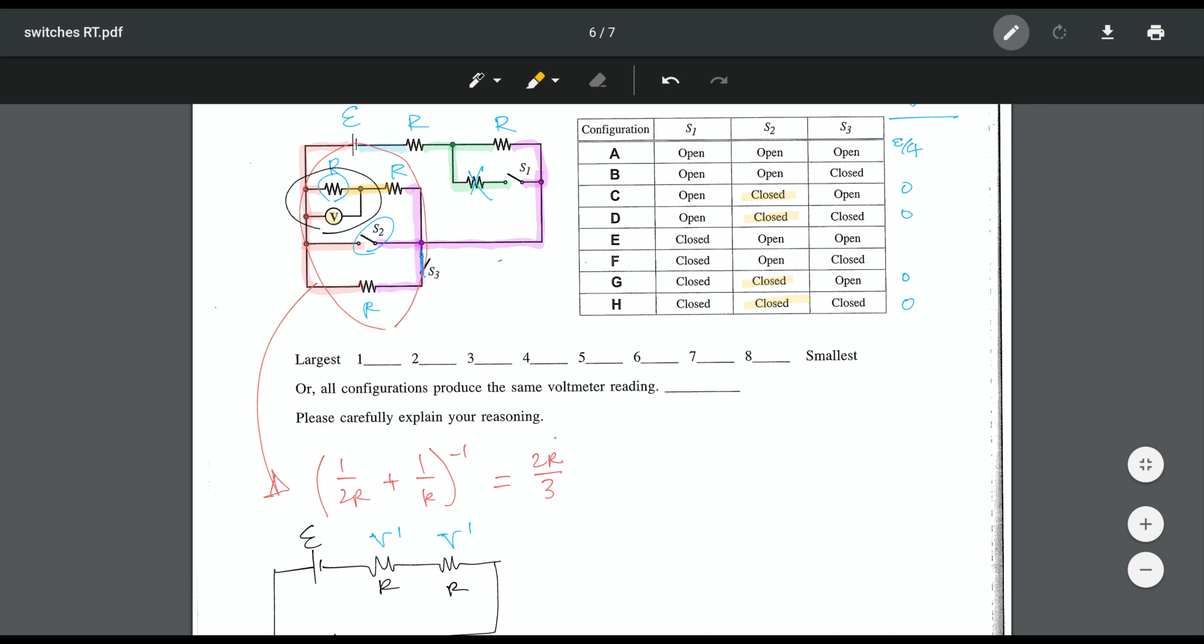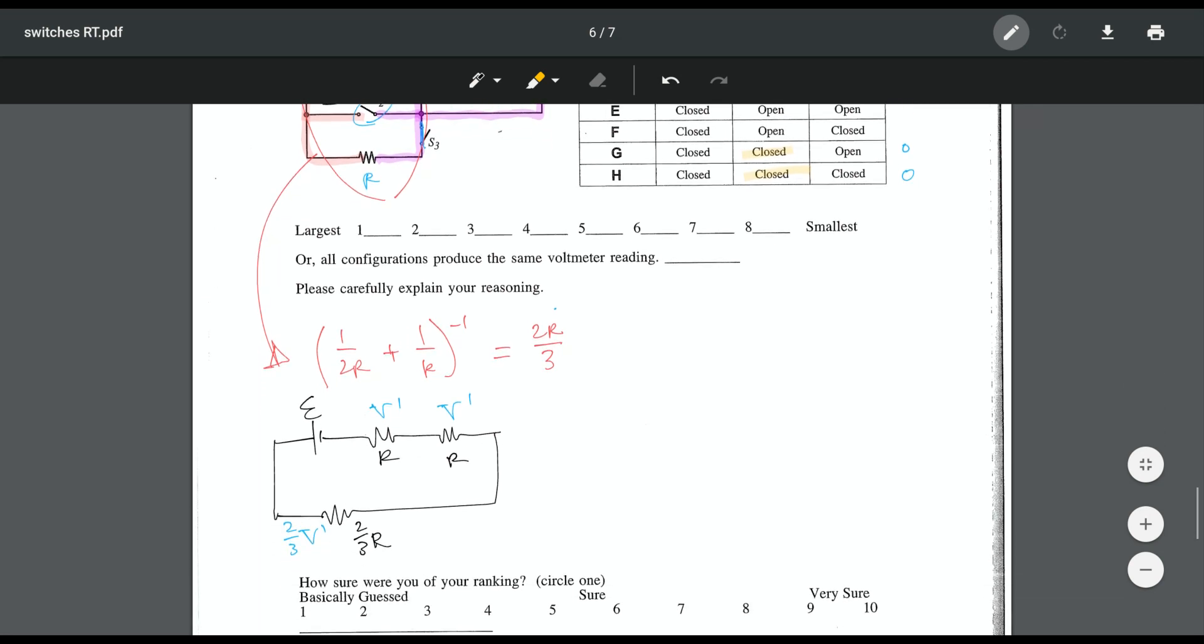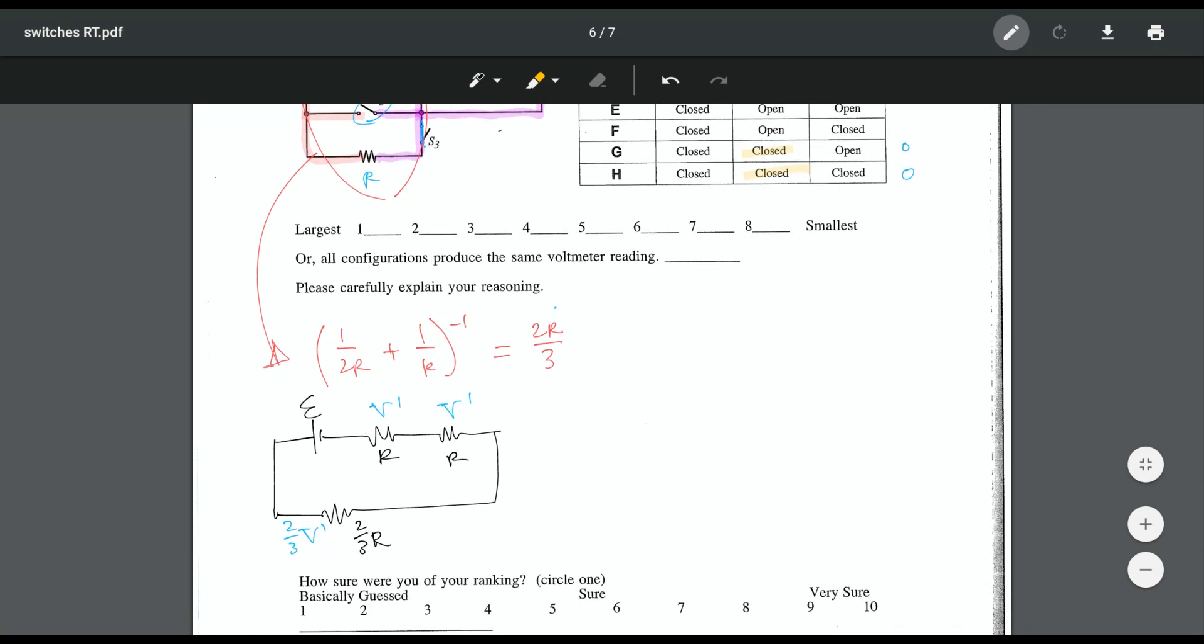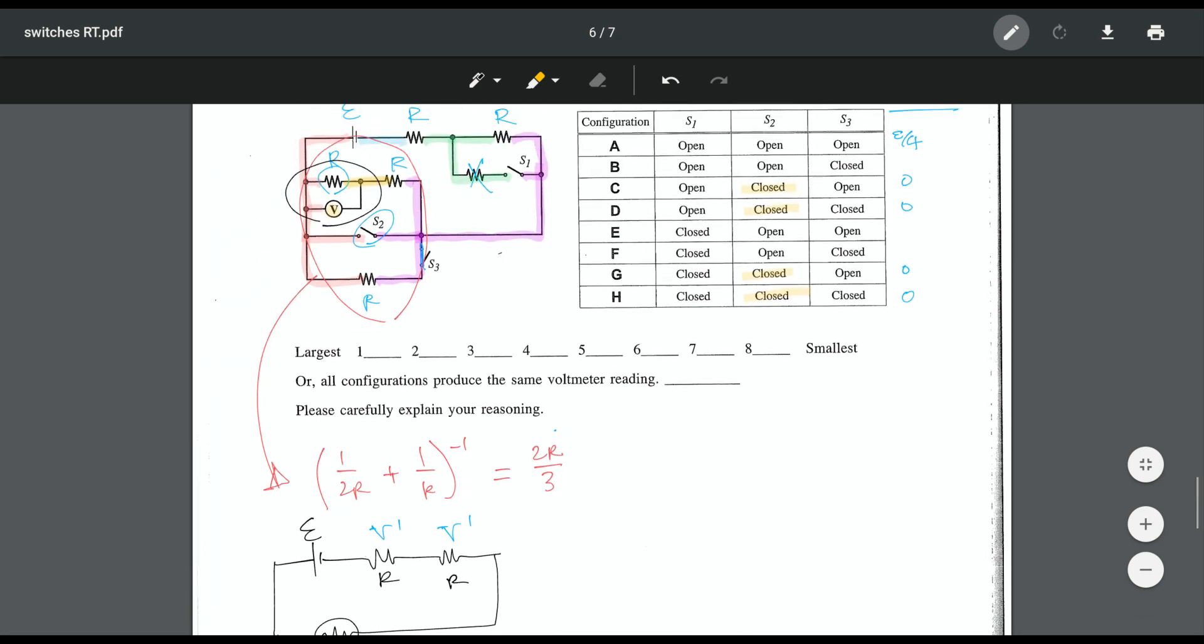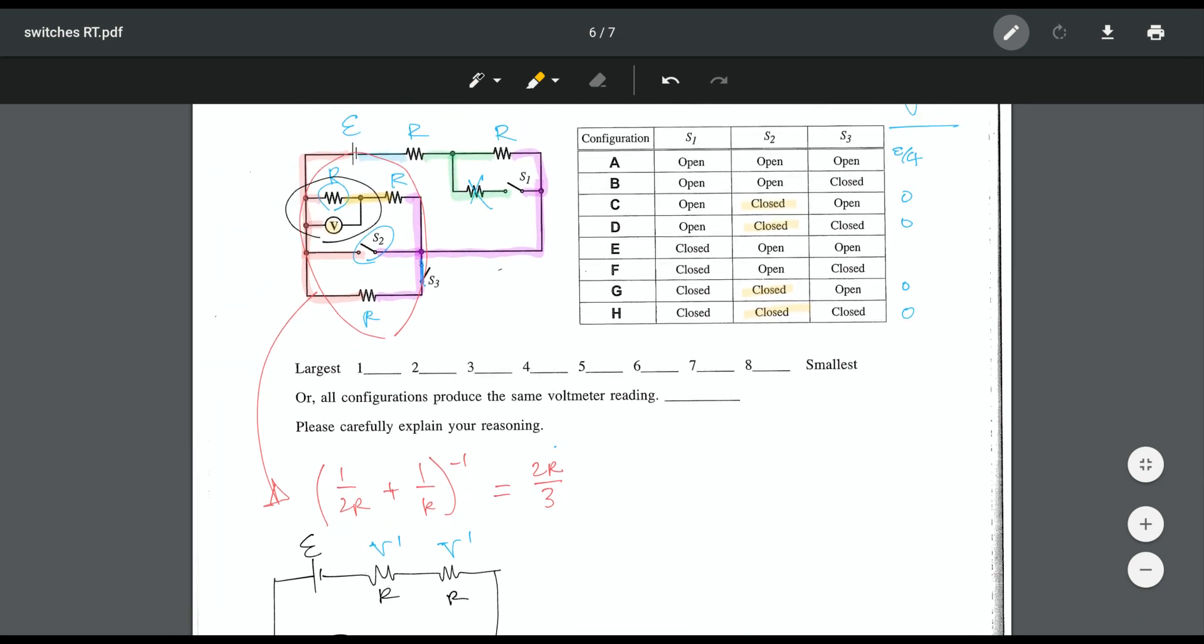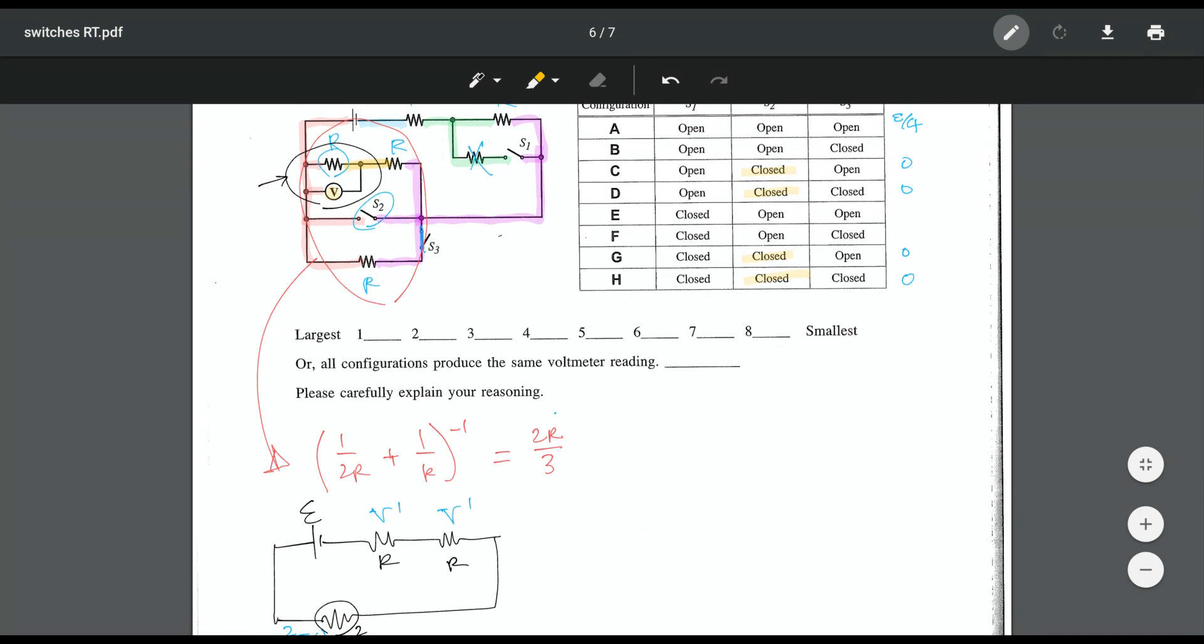Let's look at that there. So this is 2 thirds V prime, the drop over that whole network that we just figured out. These two resistors are equal to each other, so the drop here is actually just going to be half of that 2 thirds V prime, so half of the 2 thirds V prime there. So that's just going to give me 1 third V prime. But now we've got to figure out what V prime is.